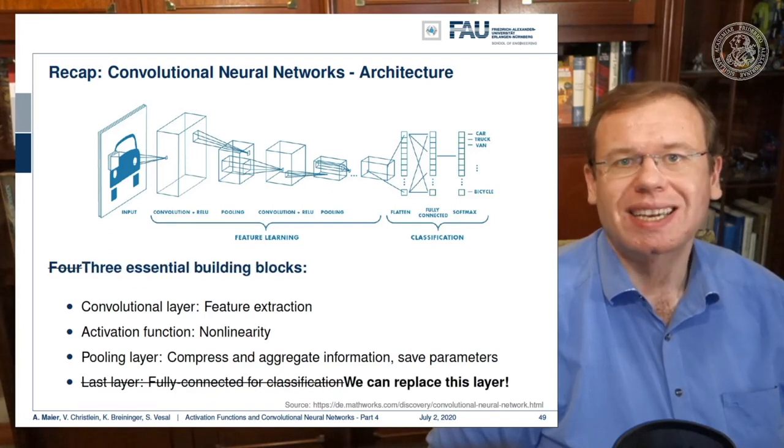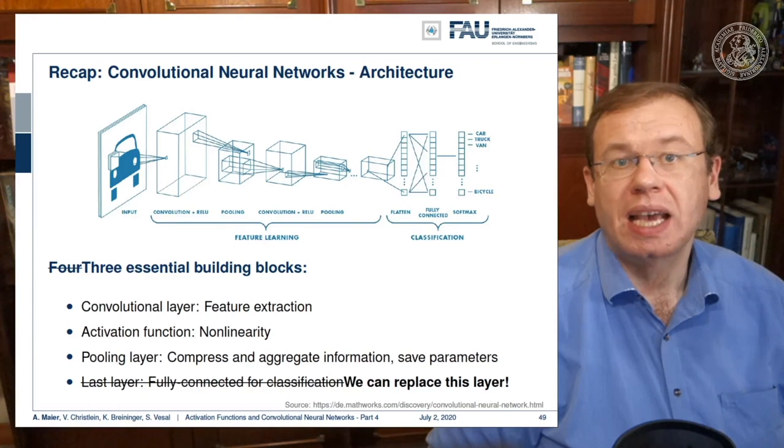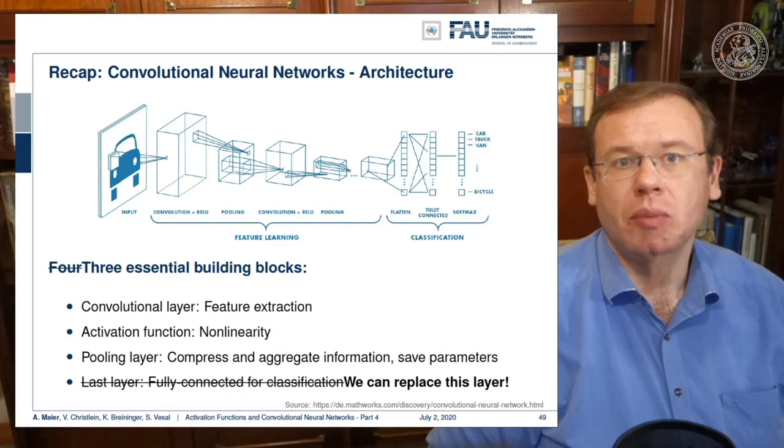Actually we can kick out this last block because we've seen that if we replace this with a reformatting into channel direction, then we can replace it with a one by one convolution. Subsequently we just apply this to get our final classification. Hence we can reduce the number of building blocks further. We don't even need fully connected layers anymore.